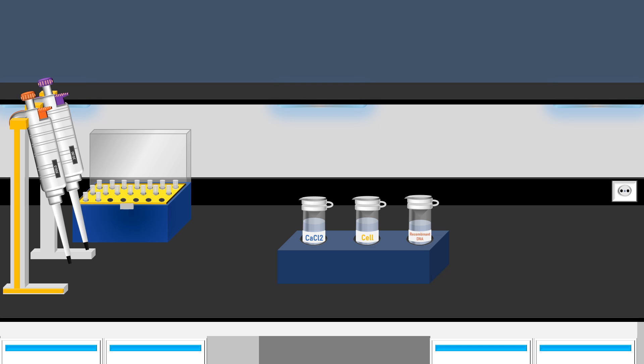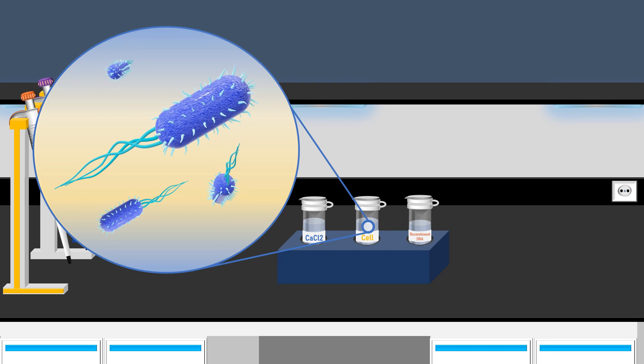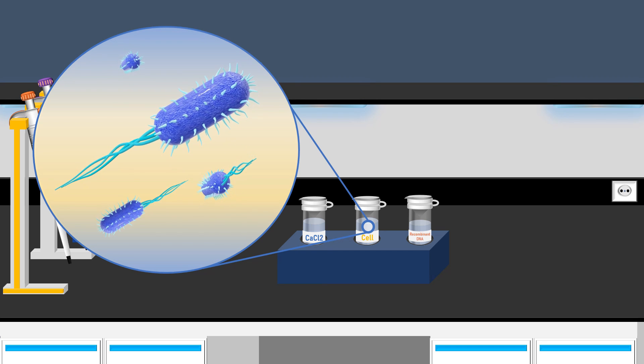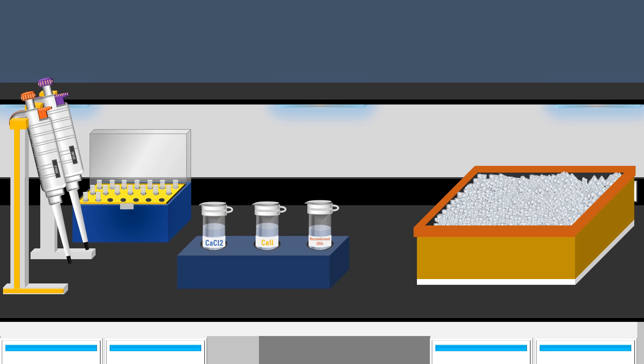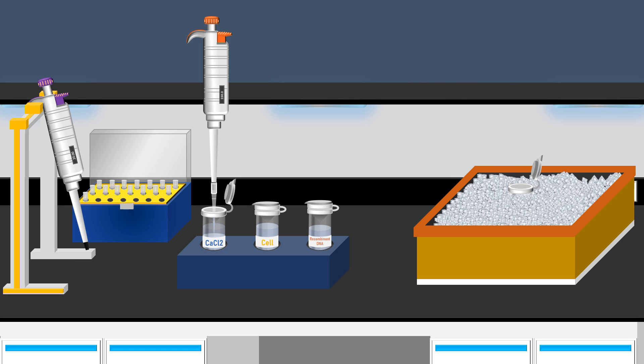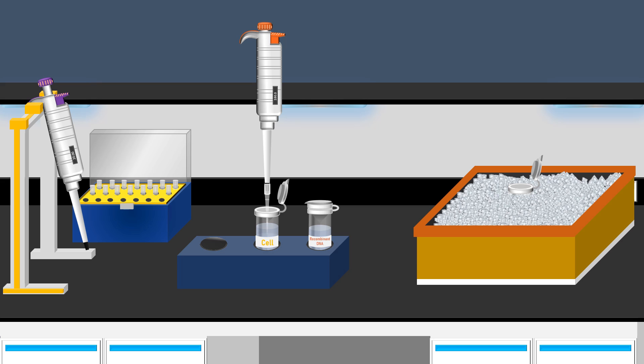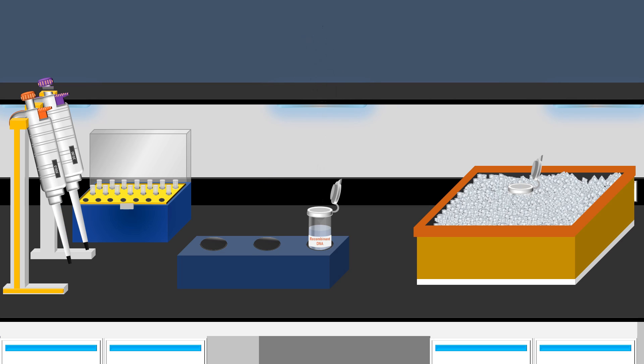For the chemical transformation, calcium chloride can be employed in the process. Additionally, competent cells, such as E. coli, serve as the host cells. For the transformation, a new tube is placed on ice. Subsequently, the calcium chloride solution is added to the tube, followed by the addition of the competent cell solution. Finally, the recombinant DNA is introduced into the tube. Then the reaction mixture is incubated for 10 minutes.